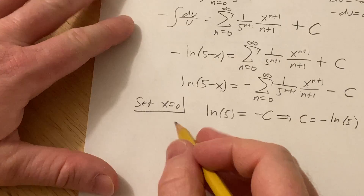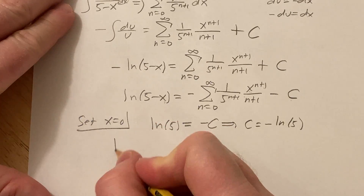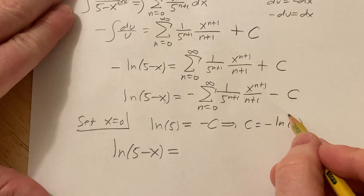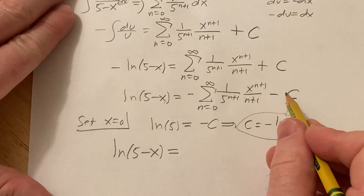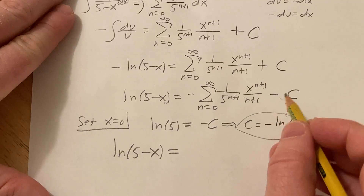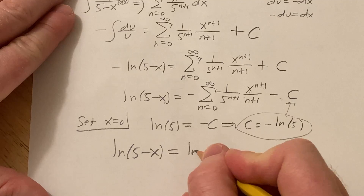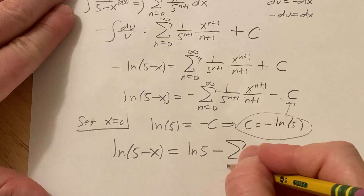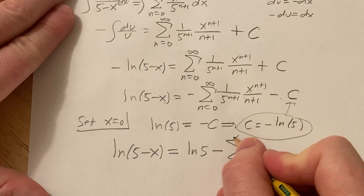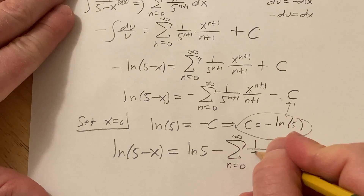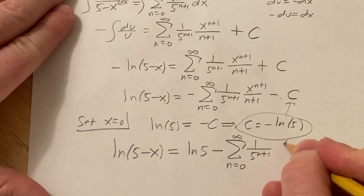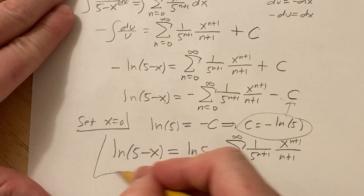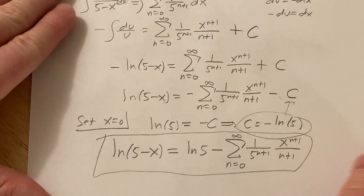Plugging C equals negative ln(5) back in — there's already a negative so it becomes a positive — the final answer is: the natural log of 5 minus x equals ln(5) minus the infinite sum as n runs from 0 to infinity of (1 over 5 to the n+1)(x to the n+1 over n+1).